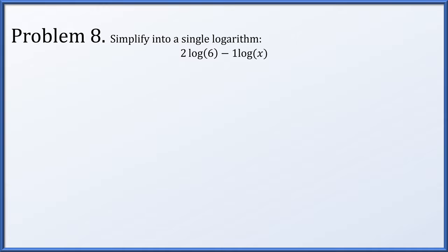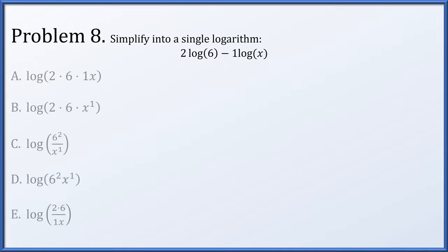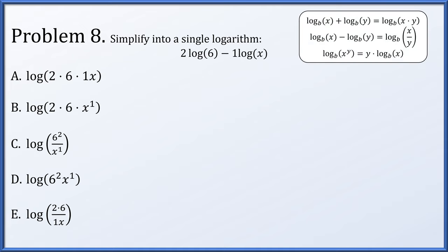Problem 8: simplify this expression into a single logarithm — 2 times the logarithm of 6 minus 1 times the logarithm of x. The basic properties of logarithms: the log of a product equals the sum of logs, the log of a quotient equals the difference of logs, and a power inside a logarithm can be brought out as a scalar multiple. We bring the scalar multiples in as exponents, giving log of 6 squared minus log of x to the first. As a difference of logarithms, this becomes the logarithm of 6 squared over x, which is option c.